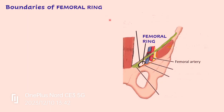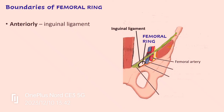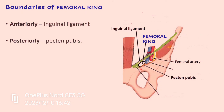Now let us look at the boundaries of the femoral ring. Anteriorly, the boundary is the inguinal ligament — the green structure extending from the pubic tubercle to the anterior superior iliac spine. Posteriorly is the pectin pubis, the part of the pubic bone; some books mention the pectineus muscle with its fascia or the pectineal ligament, which are all attached to this bony area.